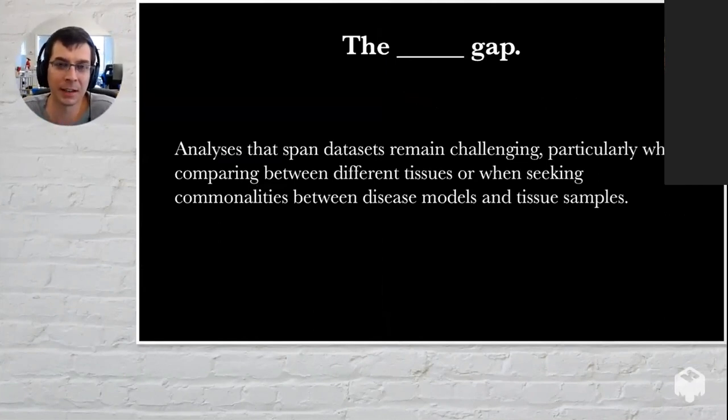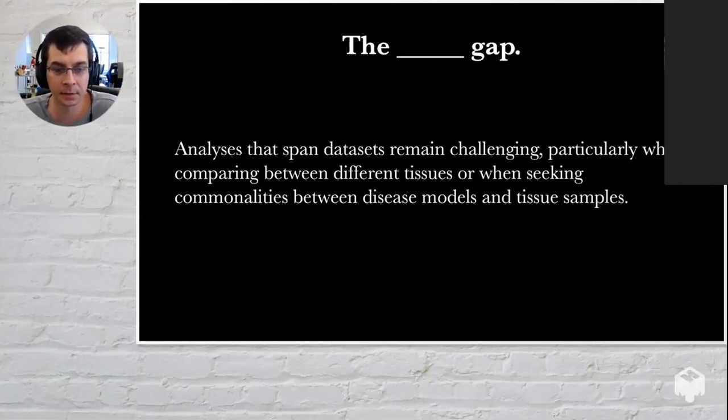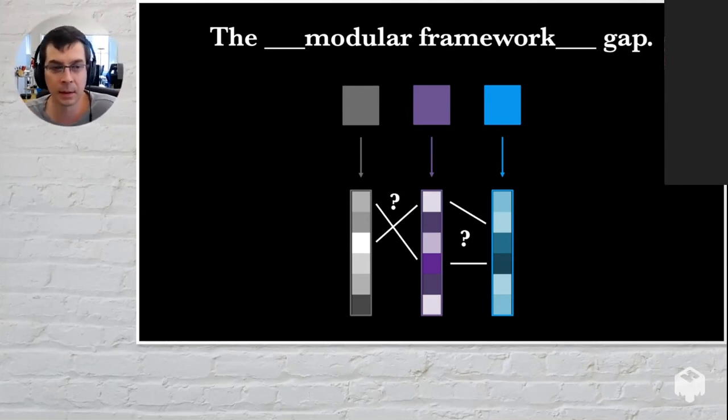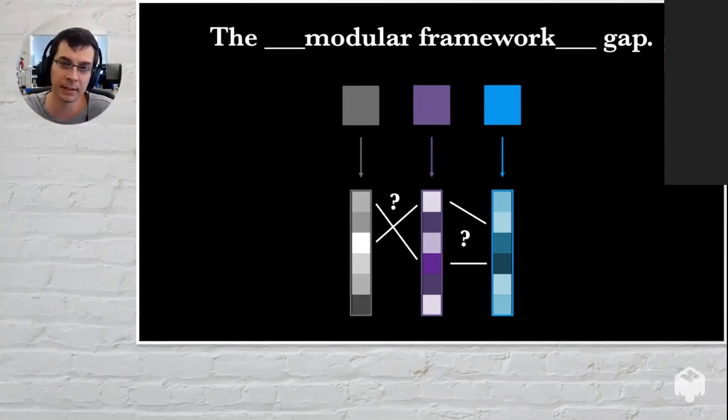We tend to work from a motivating challenge. The story I'm going to start with, the motivating challenge in this case was that if you want to do an analysis that spanned multiple gene expression data sets, this still is not terribly easy. It's particularly challenging if you need to compare different tissues or different disease models and tissue samples. I had a postdoc who joined the group, Jacqueline Taroni, who had worked on approaches using a modular framework. You can imagine using things like WGCNA to extract modules. If you had a gray data set, a purple data set, and a blue data set, you would extract modules from each of them and use your expert knowledge to try to connect which module in this data set is the same as that module in that data set.